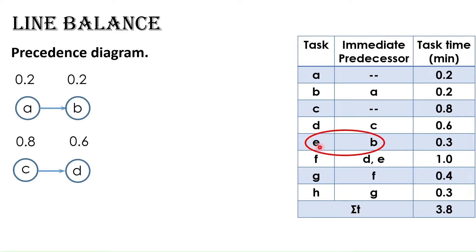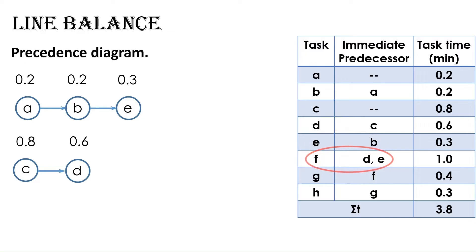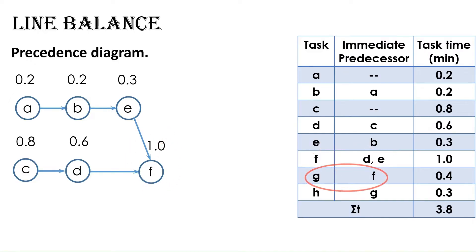The fifth task is task E and its immediate predecessor is task B. So, draw an arrow starting at B and pointing to the right. Then draw a node with the letter E inside and 0.3 above, as the duration of task E is 0.3 minutes. The next task is task F with two immediate predecessors, task D and task E. Here we will draw two arrows from D and E. After that, draw a node with the letter F inside and its duration 1 minute above. The next task is task G with an immediate predecessor, task F. So, draw an arrow starting from F and pointing to the right. Then draw a node with the letter G inside and its duration 0.4 above.